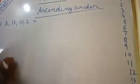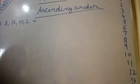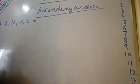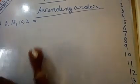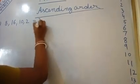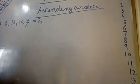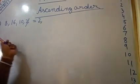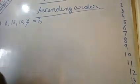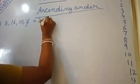See children — which is the smallest number here? Out of 8, 16, 10, 2, if you are counting from 1, which number will come first? 2 will come first. So the smallest number is 2. Then cut that 2. After 2, you count 3, 4, 5, 6, 7, 8. Which number is coming? 8 is coming. So we write 8 next.